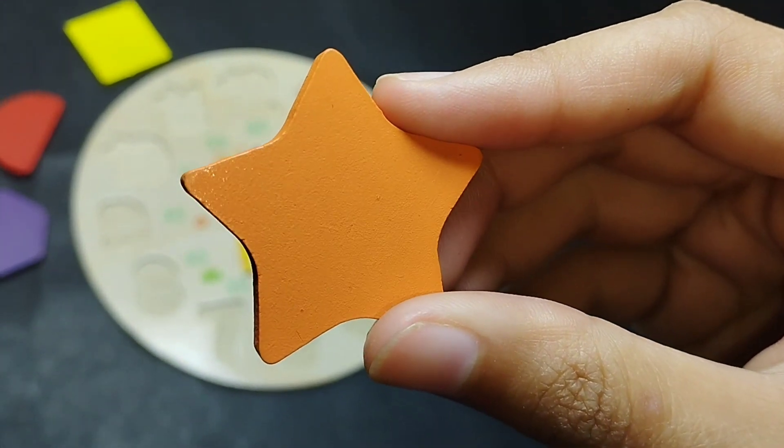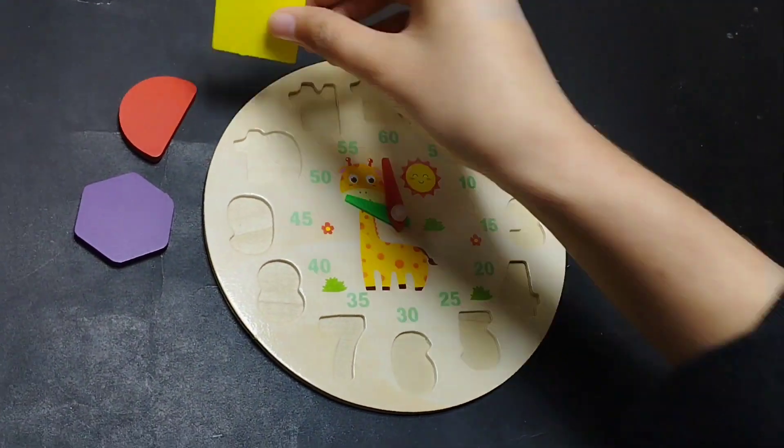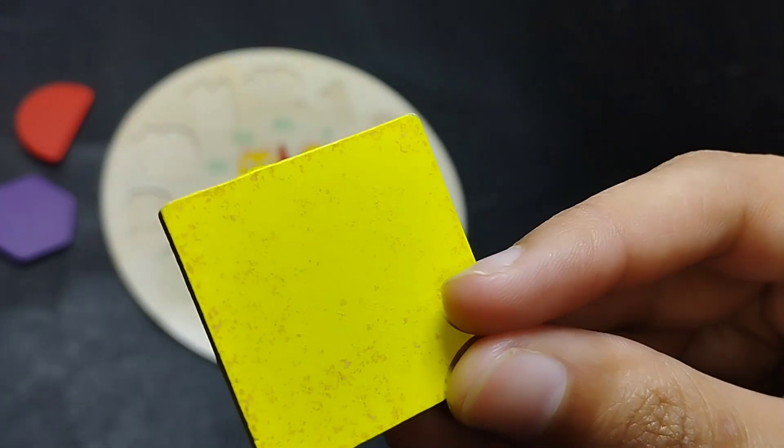Flower, this is star shape, star shape. Square, this is square shape.